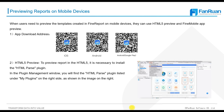You can scan the QR code provided in the link to download the mobile app. To preview a report in HTML5, it is necessary to install the HTML Parse plugin. FineReport Designer installs the plugin by default. Click on Server, then Plugin Management in the Designer, and you can view it in My Plugins on the right side of the Plugin Management pop-up.